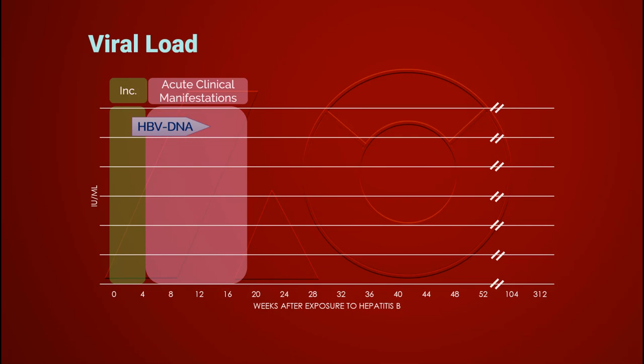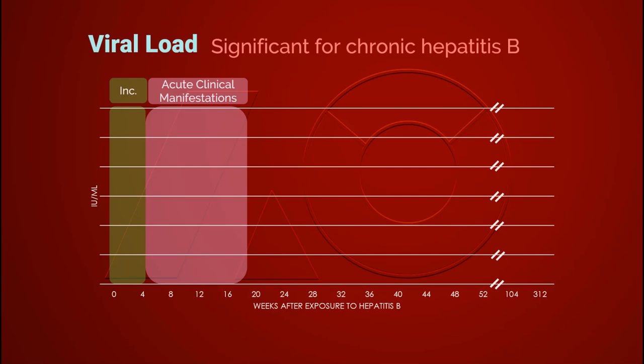Viral load is obtained via polymerase chain reaction (PCR) test. It is especially important for chronic hepatitis B infection. Together with liver enzymes and serologic markers, viral load provides information for evaluating the outcomes of antiviral therapy. Viral load is not usually tested during acute hepatitis infection and is typically prescribed after receiving results of serologic markers. Viral load varies throughout the course of infection depending on the stage of chronic infection.